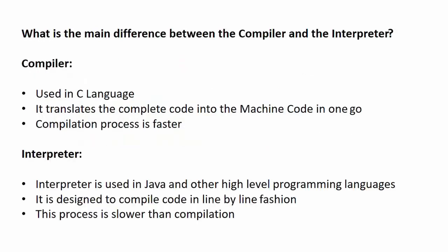Next question: what is the main difference between the compiler and the interpreter? A compiler is used in C language — it translates the complete source code into machine code in one go. The compilation process is faster. An interpreter is used in Java and other high-level programming languages — it compiles the code in a line-by-line fashion. The process is slower than compilation. The striking difference is that the compiler translates the whole code in one go, while the interpreter does the same process line by line.